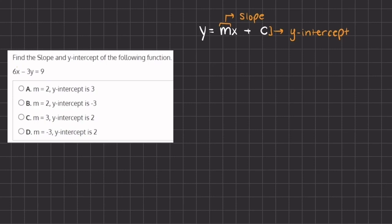In this video we are going to learn how to recognize our slope and our y-intercept in our linear functions. A linear function is represented by the formula y equals mx plus c, where m is our slope and c is our y-intercept.